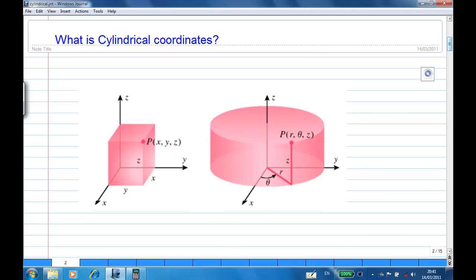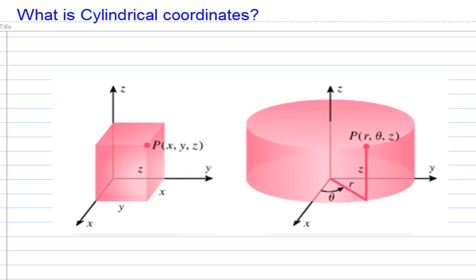Let's look at what cylindrical coordinates are. We know that in a three-dimensional system we are familiar with the usual Cartesian coordinates using X, Y, Z. Now instead of using X, Y, Z there's another system using R, theta, and Z — we call it the cylindrical coordinates, where R is the distance from the point to the Z axis, theta is the angle rotated from the X axis, and Z is the usual Z coordinate.